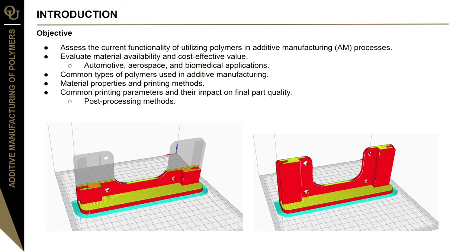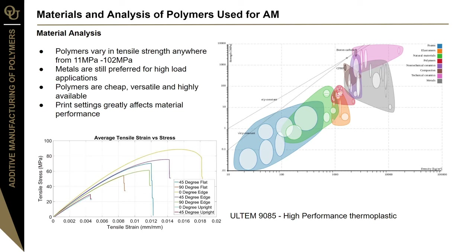Moving on to a summary of technical papers: there are quite a few selections of polymers that can be used for additive manufacturing. You can see here on the chart on the right a large cloud representative of polymers in red. Compared to metals, represented by the gray cloud, polymers have a very wide range of tensile strength, ranging anywhere from approximately 1 to 11 megapascals. So finding a polymer that suits your application is pretty easy. However, metals are still preferred for high-load applications, as they will outperform polymers in those scenarios. But polymers are cheap, versatile, and highly available.